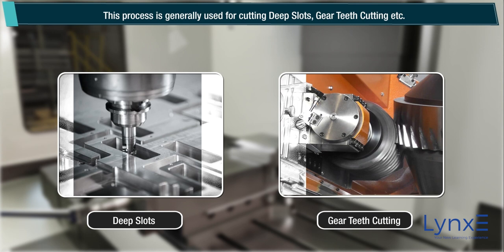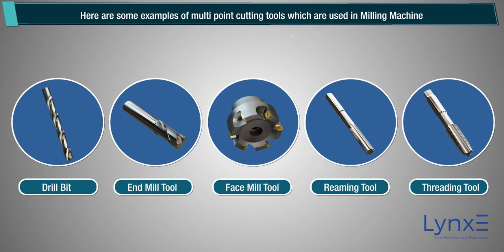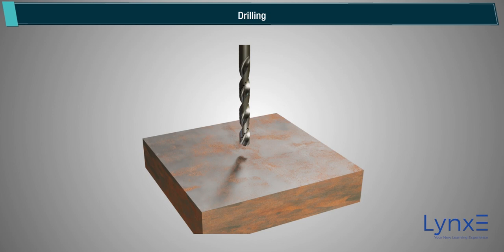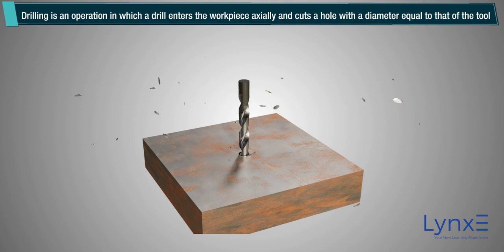Here are some examples of multipoint cutting tools which are used in a milling machine. Drilling is an operation in which a drill enters the workpiece and cuts a hole with a diameter equal to that of the tool.